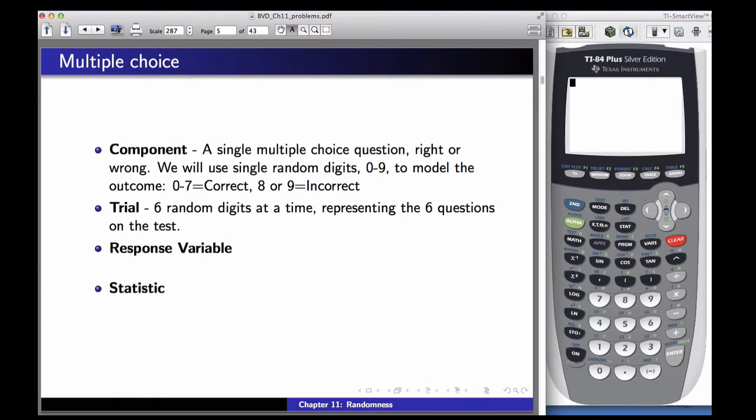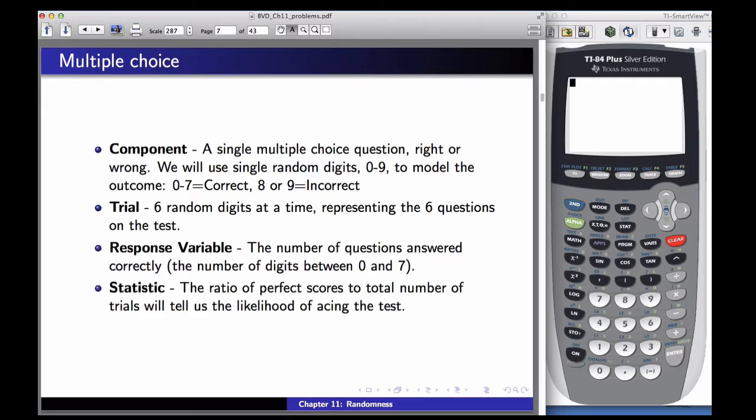A trial is going to be six random digits at a time because that's going to represent the six questions on the test. The response variable will be the number of questions answered correctly, so the number of digits between 0 and 7. The statistic that I'm going to take is the ratio of perfect scores to the total number of trials, and that will tell us the likelihood of acing the test.